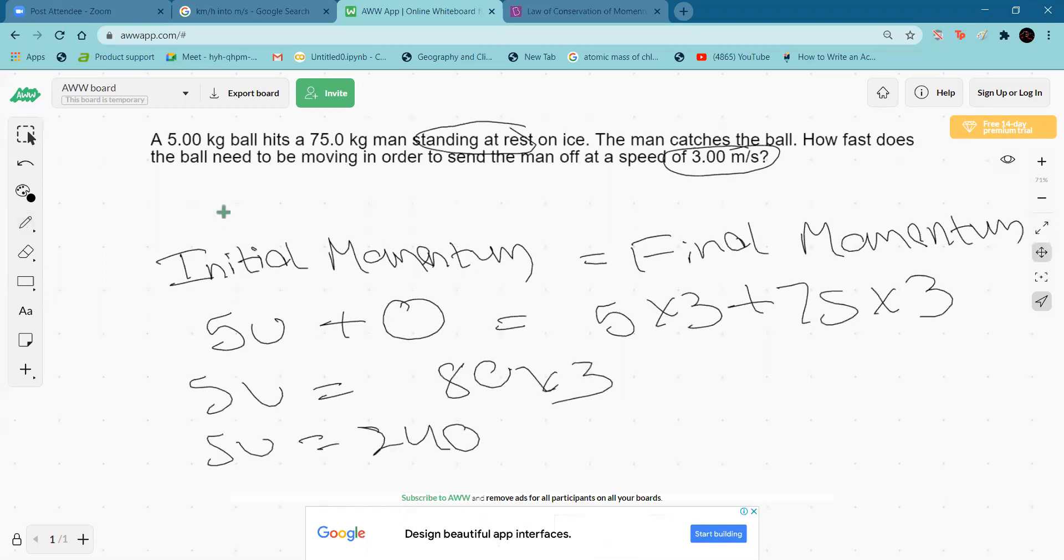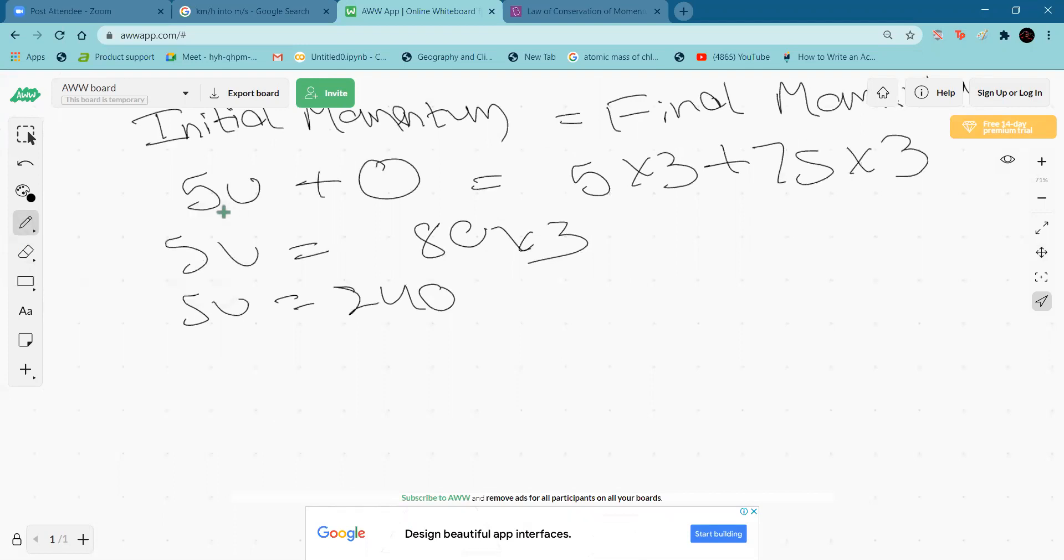So u equals 240 divided by 5, which equals 48.